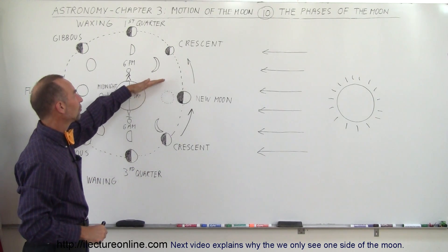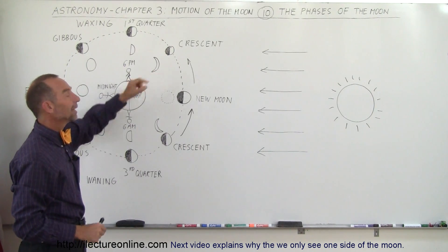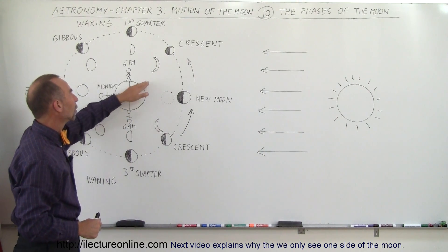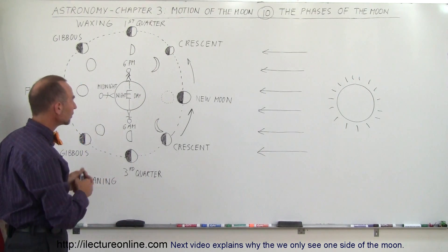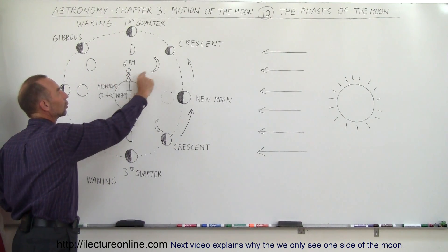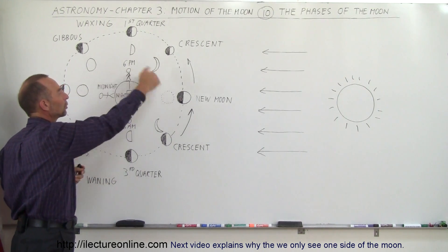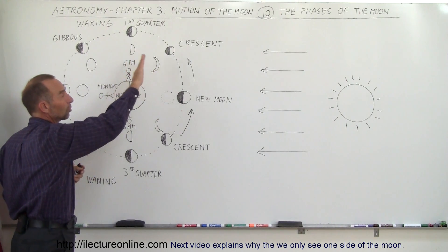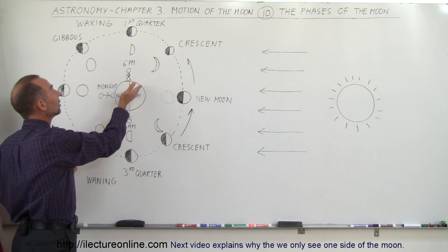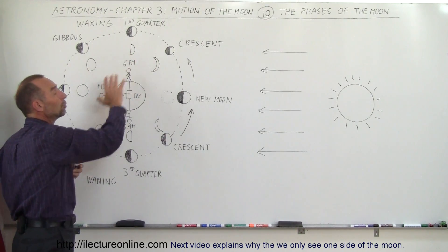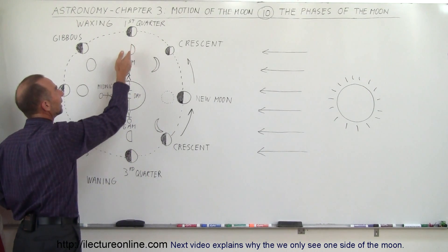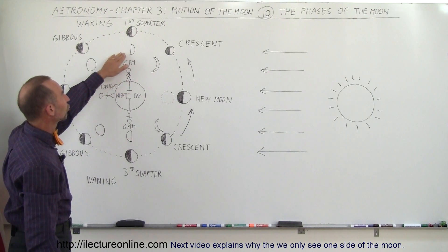As the Moon continues on its trip a few days later, you begin to see a small portion of the Moon. It shows up as a crescent shape, so we call that a crescent Moon. Notice that as the night begins, let's say at 6 p.m., we can look towards the western horizon and see the Moon slowly disappearing over the horizon. As the Moon continues, it will be higher up at 6 p.m. and we'll see the Moon for about half a night. The Moon will now have a quarter shape — we call this the first quarter.